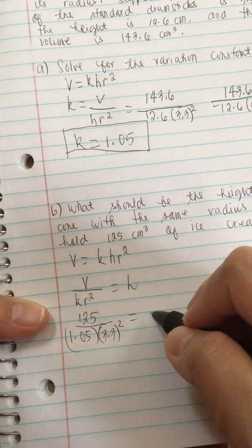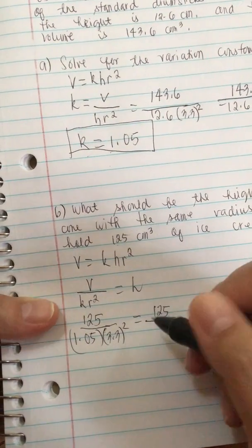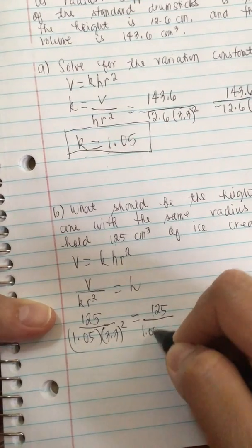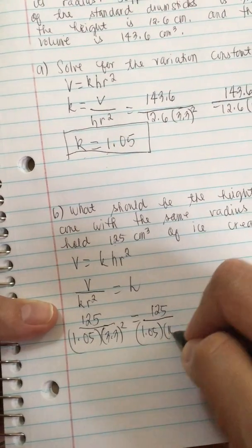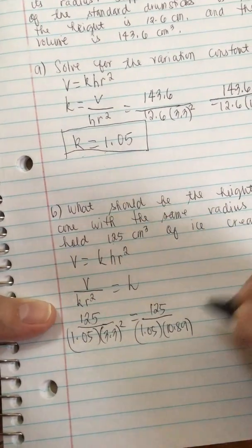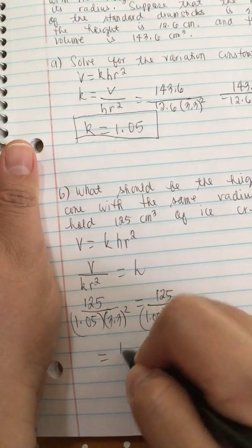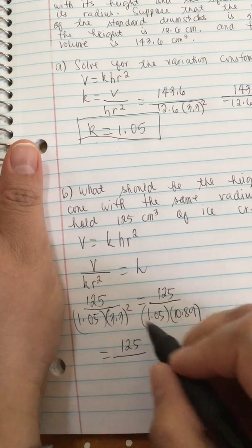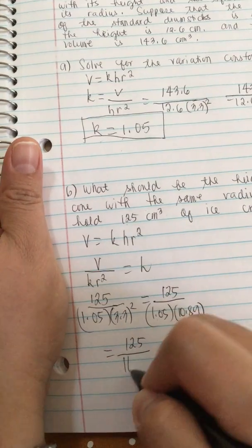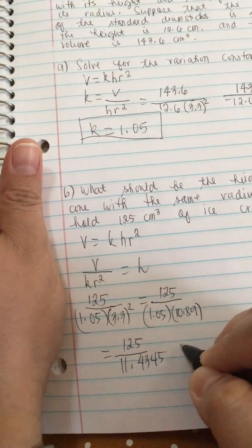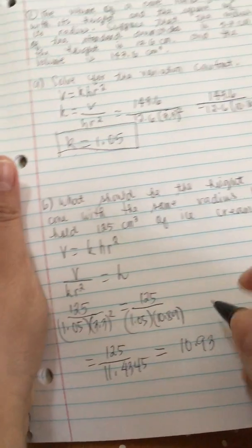So 1.05 times 3.3 squared equals 10.89. This is equal to 125 over 11.4345, which equals 10.9 cm.